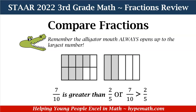And one more example. We have 7 tenths is greater than 2 fifths. We have a rectangle. Looking at the one on the left-hand side, we have 10 equal parts and of that, 7 are shaded. So 7 is my numerator for the shaded parts and the total parts is 10 — that is my denominator. Looking at the rectangle on the right, we have 5 equal parts — that is my denominator — and 2 of the parts are shaded. That is 2 fifths. So 7 tenths is greater than 2 fifths.